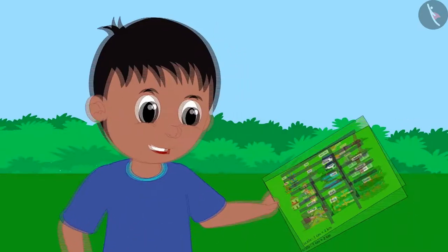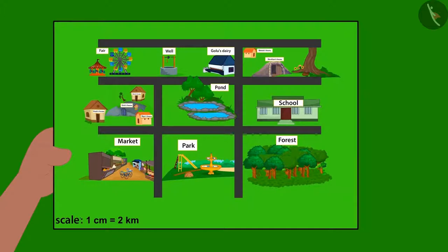Then Raju took a look at Bablu's map. Now I get it. There is no compass given on your map.